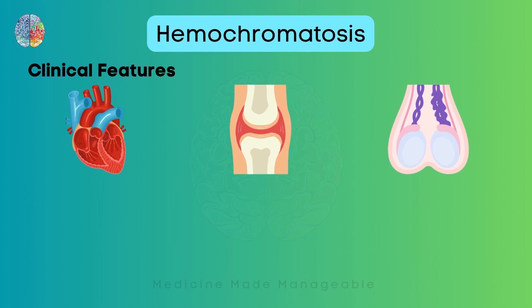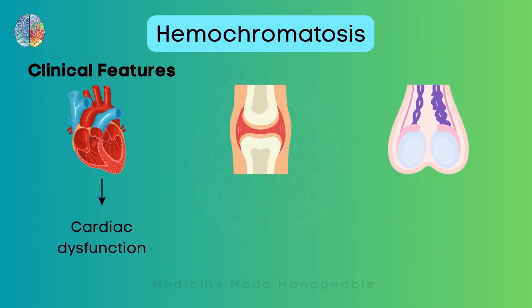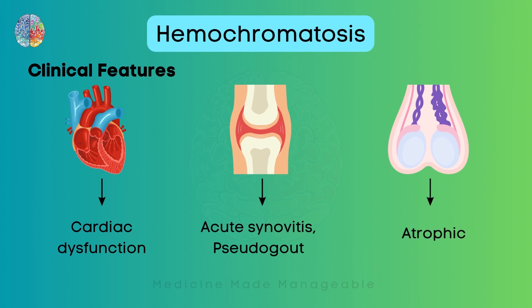In the heart, iron accumulation can cause cardiac dysfunction. In the joints, it can cause acute synovitis or pseudogout — pseudogout is another very important keyword to look out for. And in the gonads, it can cause atrophy.